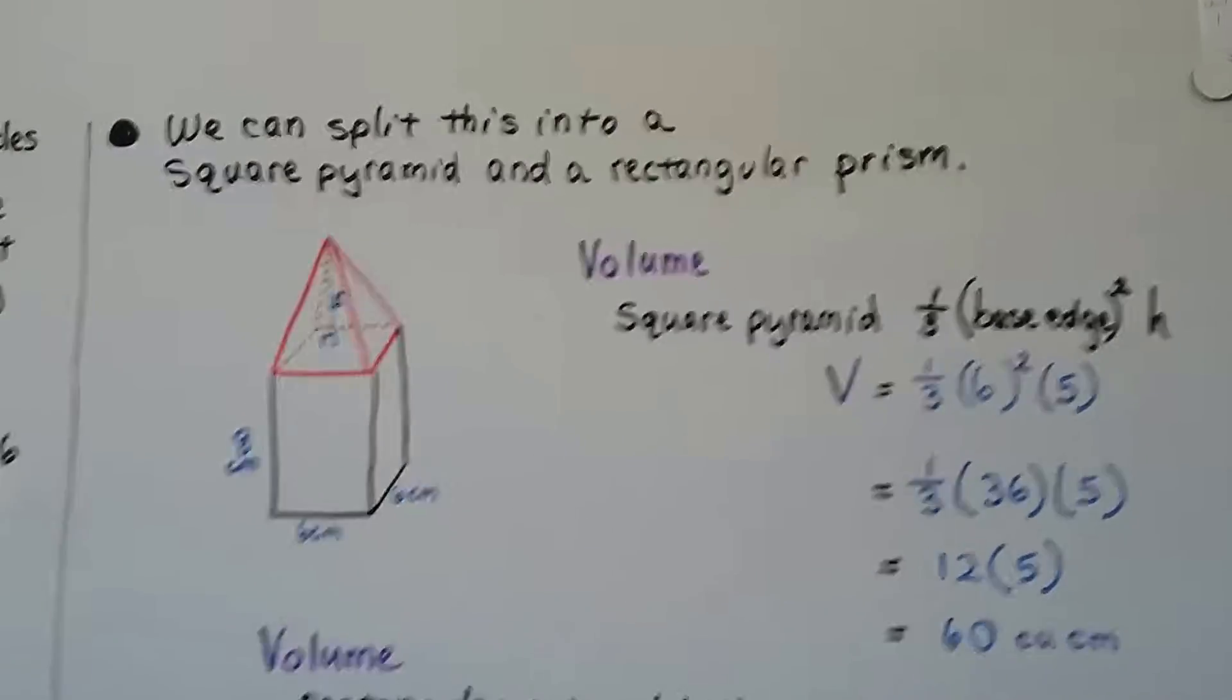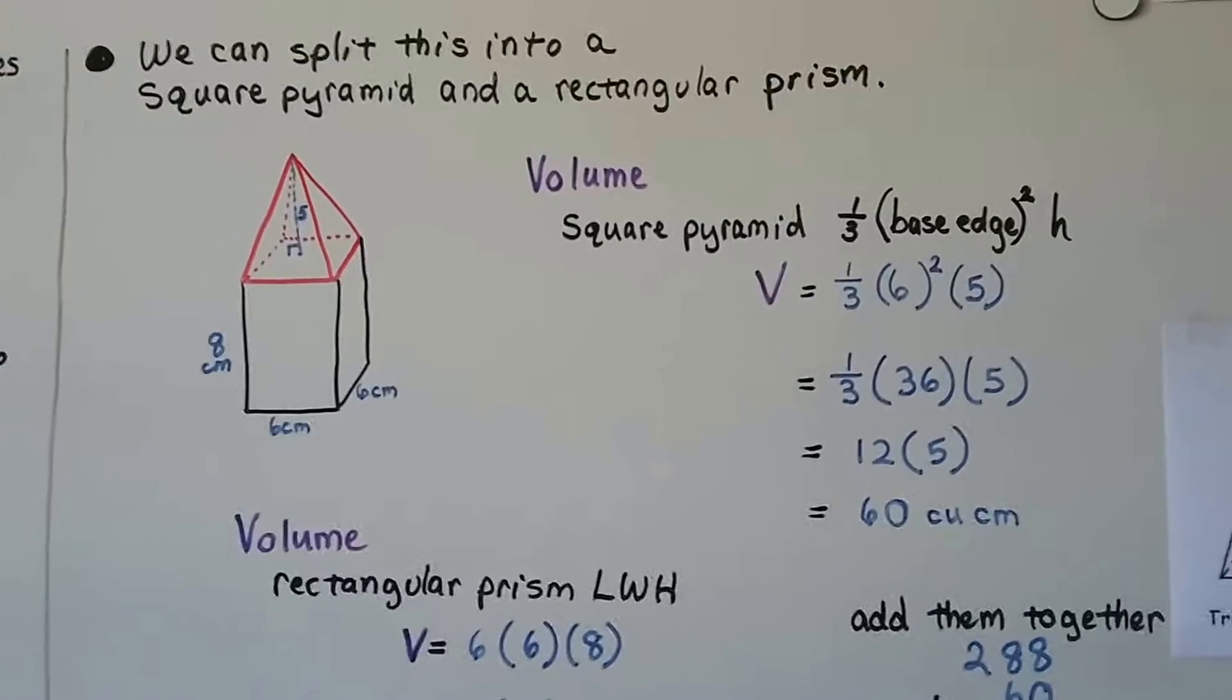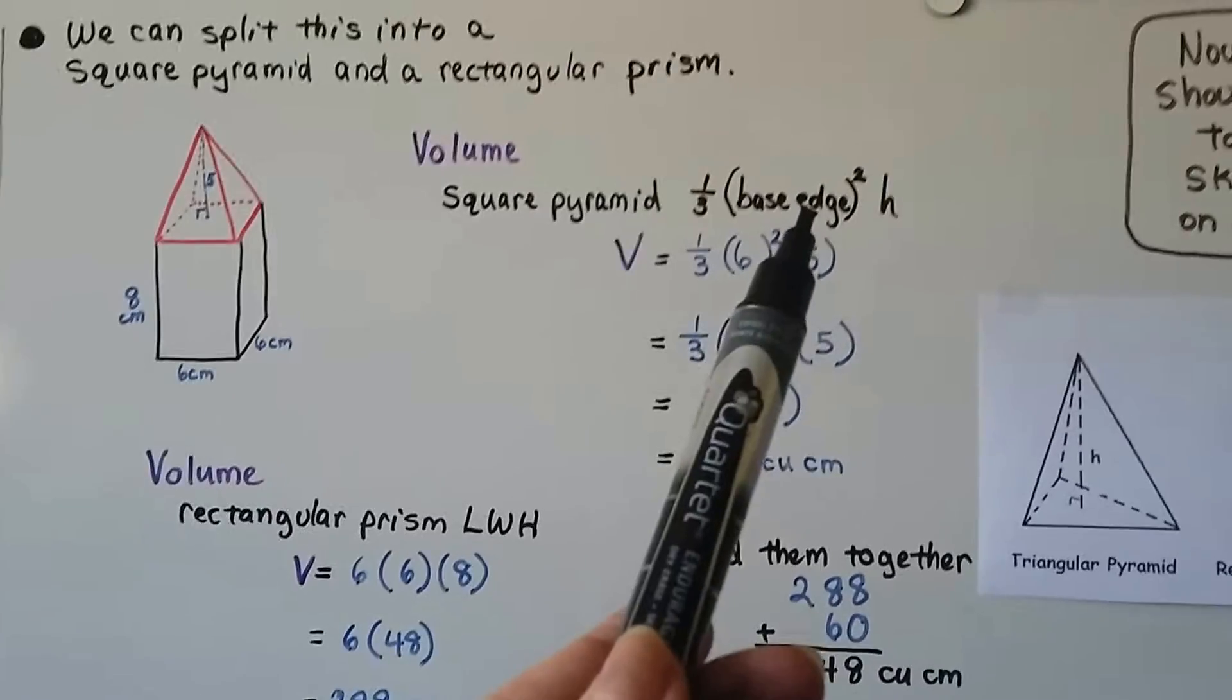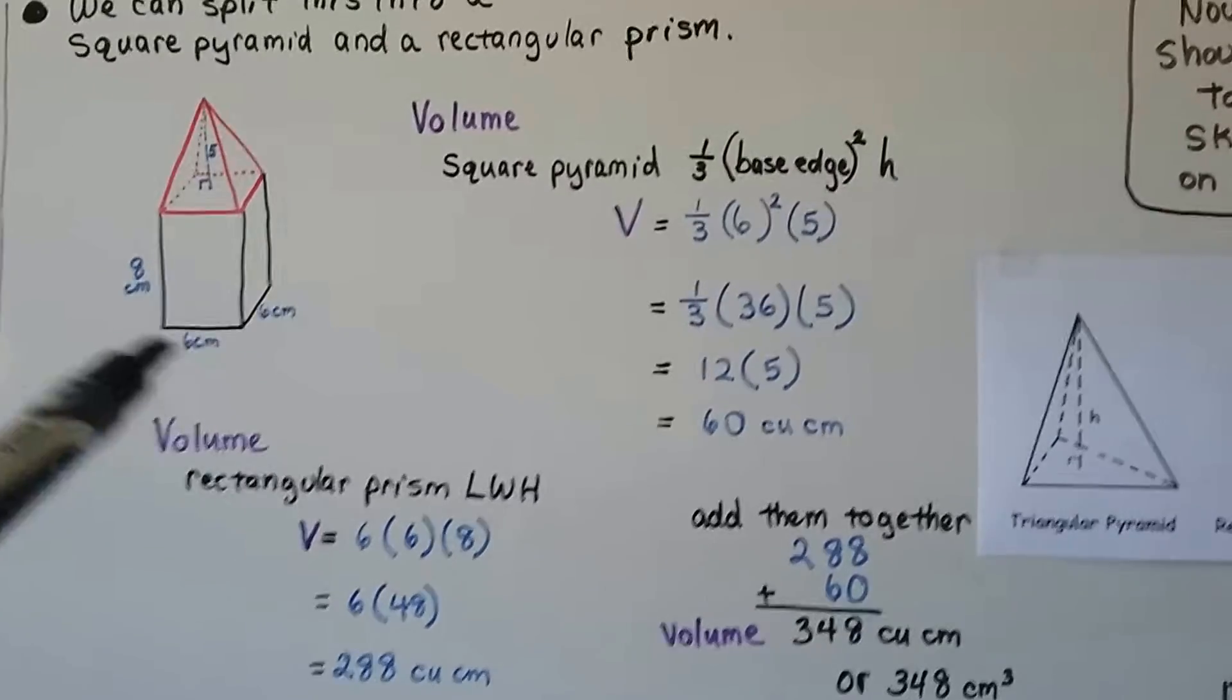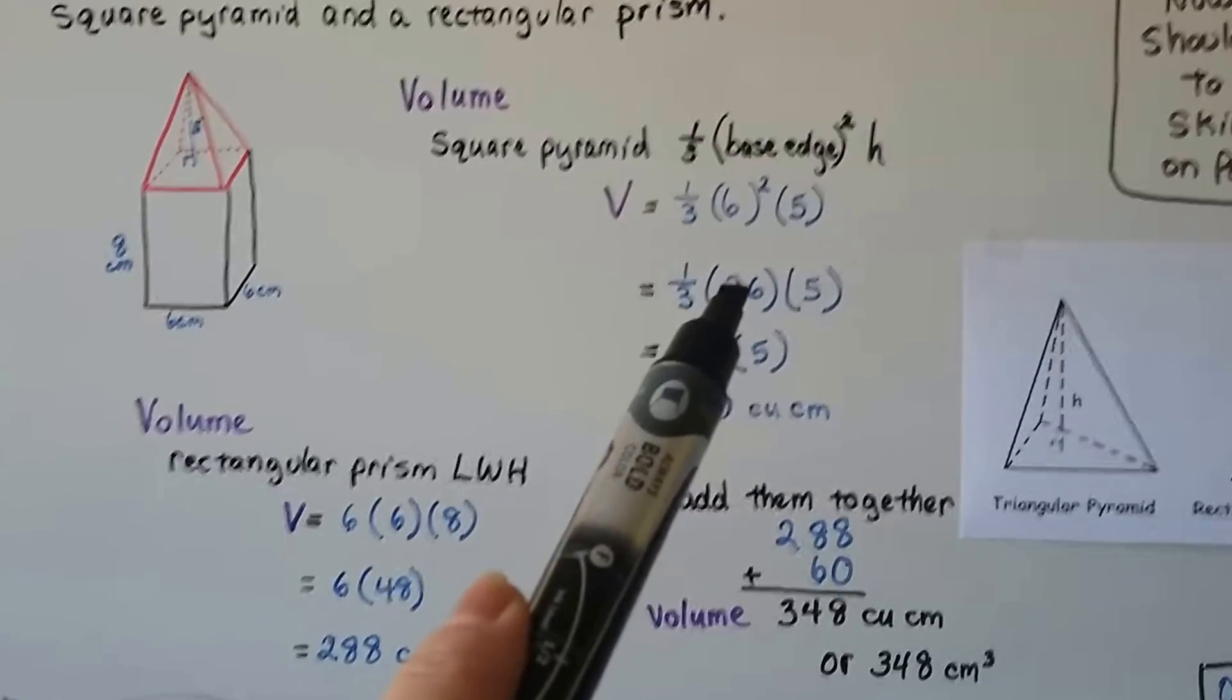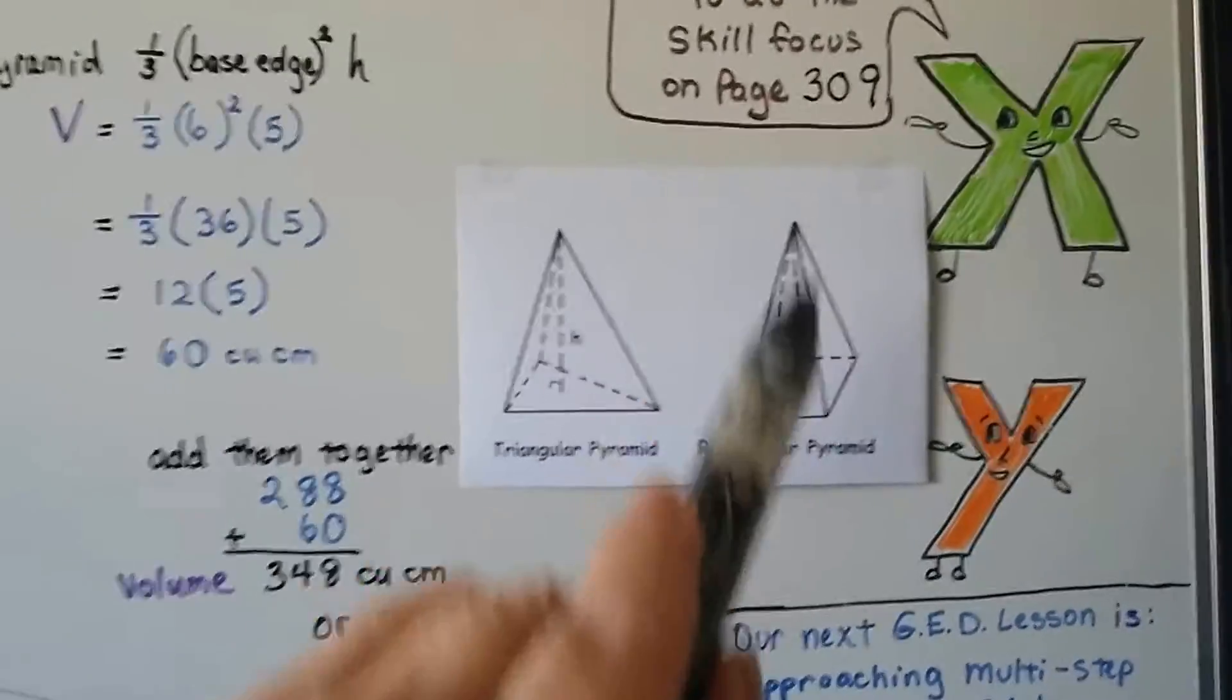We can split this into a square pyramid and a rectangular prism. We find the volume of the square pyramid, we find the volume of the rectangular prism, and we add them together. So, the formula for the volume of a square pyramid is one-third times the base edge squared times height. There's no measures here around the base of this square pyramid, but there are measures here, so we could use those. So, we have 6 times 6. That's going to give us 36. And the height is 5. Remember, the height of a pyramid comes perpendicular from the base and goes straight up. It doesn't matter what type of pyramid it is.